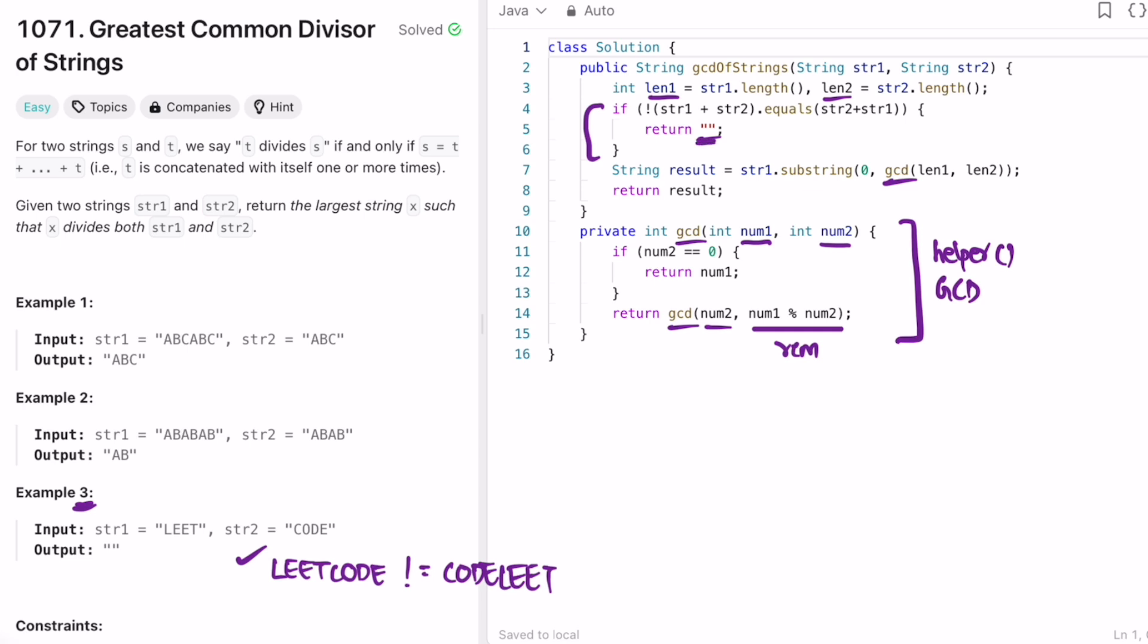And in all other cases, both str1 plus str2 is equal to str2 plus str1. This condition will be skipped for first two examples and I'm calculating the result by finding the substring of str1 using the substring method.